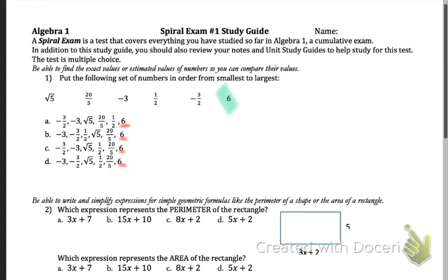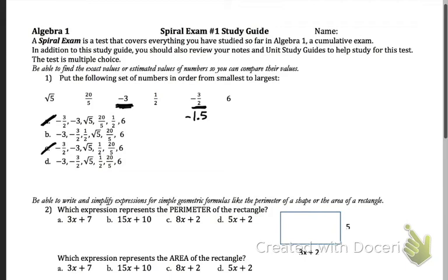Let's look at the smallest number. See how we have different answers for smallest number over here? Well, negative 3 over 2 — that would be just over 1, that's actually negative 1.5. So negative 3 is our smallest number. So I know that I can cross off A and I can cross off C. My answer is either B or D.